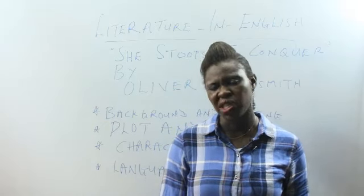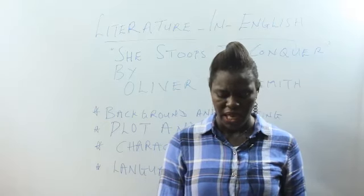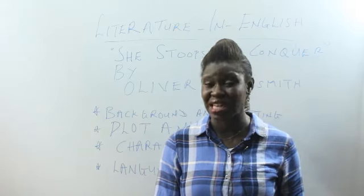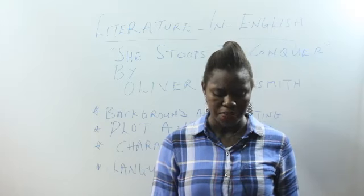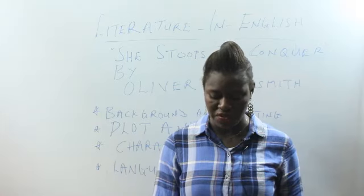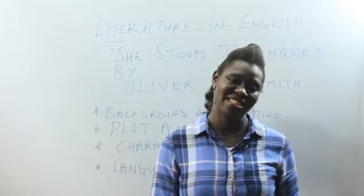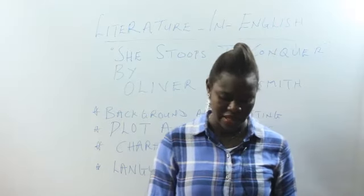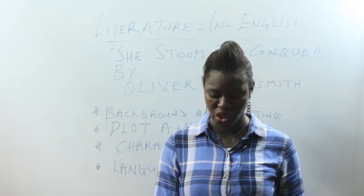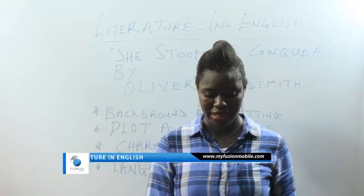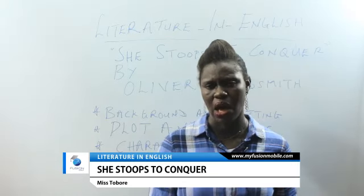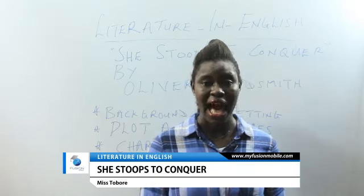What is the significance of Tony Lumpkin's role? It is Tony's initial deception of Marlow — as a joke — which sets up the plot. Tony goes to great efforts to help Neville and Hastings in their plans to leave the country because he despises Constance. Tony's free-willing ways of drinking and tomfoolery are probably because of the huge inheritance that awaits him when he comes of age.